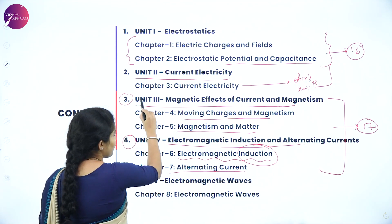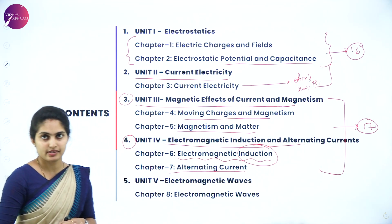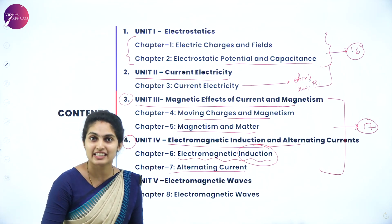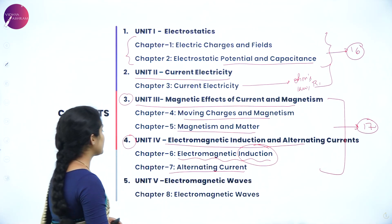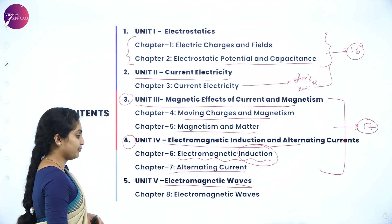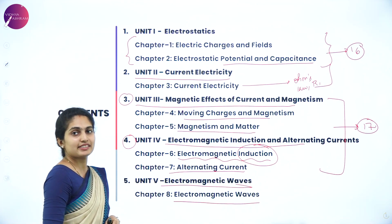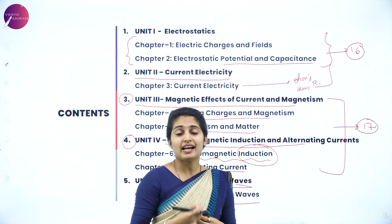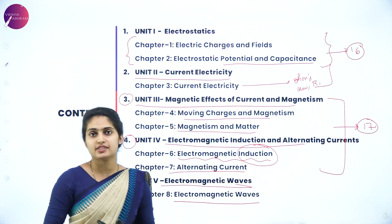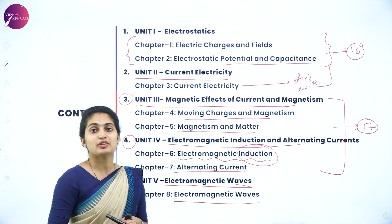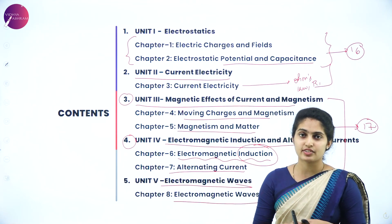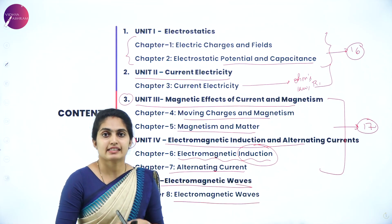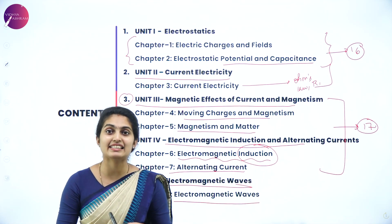Units three and four together are for 17 marks, while units five and six together are for 18 marks. Unit five contains Chapter 8, Electromagnetic Waves, where we study the influence of electric and magnetic fields together, producing different types of radiations such as radio waves, microwaves, visible rays, UV rays, etc. We study their frequency and applications. It is a very small and easy chapter.